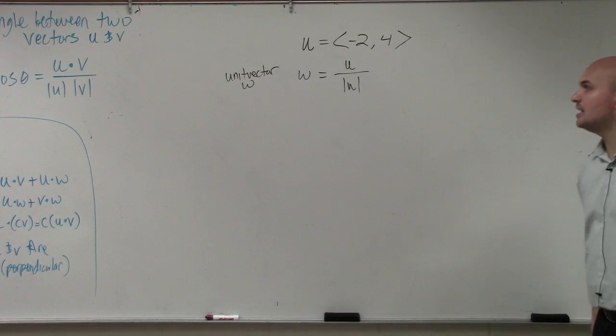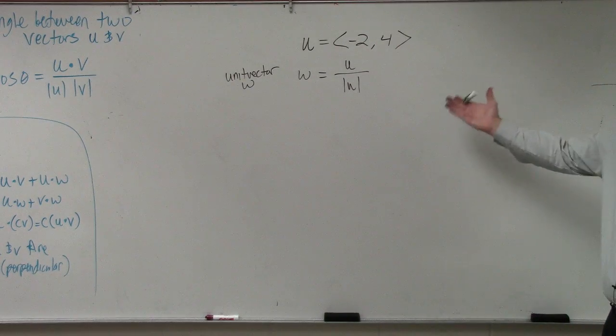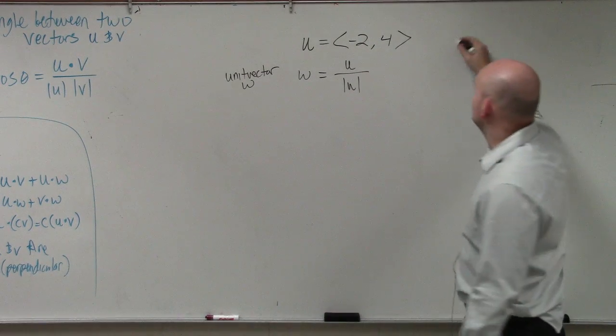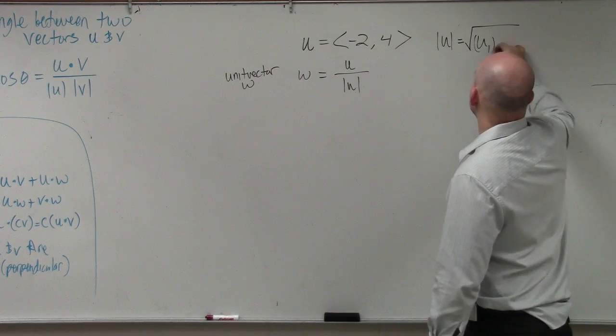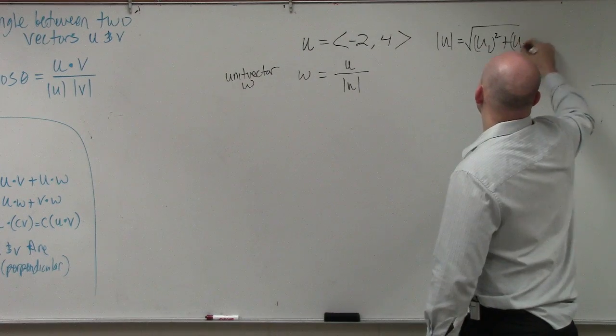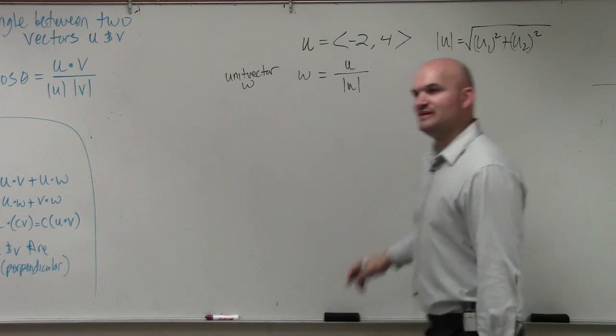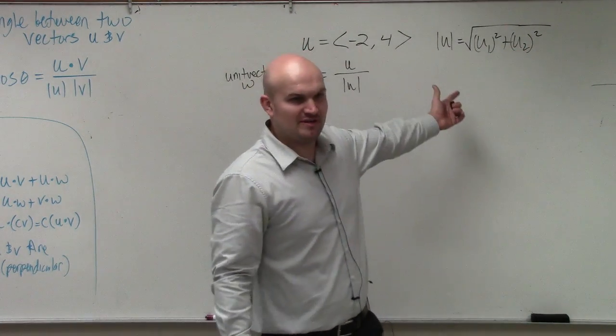So whenever you compute the unit vector, the main important thing is you need to compute what the magnitude is. So our magnitude of a vector is u1 squared plus u2 squared. I'm not using v in this case because my vector is not v. My vector is u.